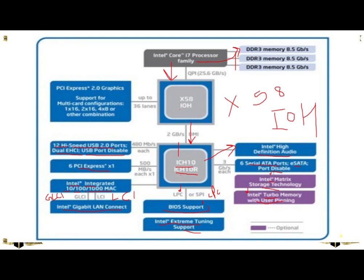X58 IOH is connected to up to 36 lanes. It is connected to PCI Express 2.0 graphics support for multi-card configurations: 1x16, 2x16, 4x8, or other combinations. This is the architecture of Intel Core i7 processor.